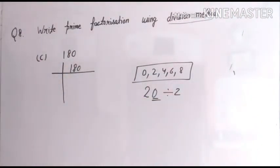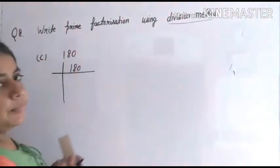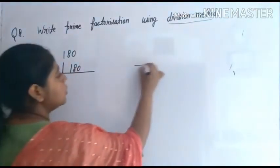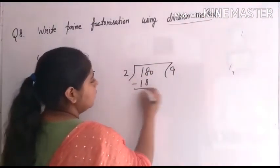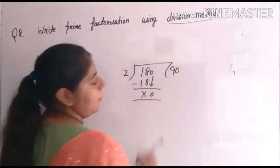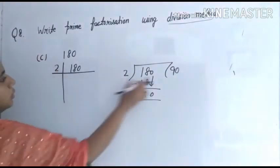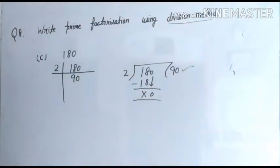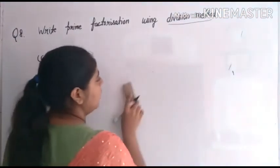So here, in 180, zero is appearing at the end. It means this number will be exactly divisible by two. So let's divide 180 by two. Two nines are eighteen — zero brought down — zero here since it doesn't divide. Quotient is 90, divisor is two, written here.